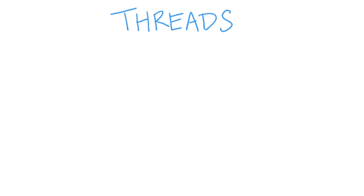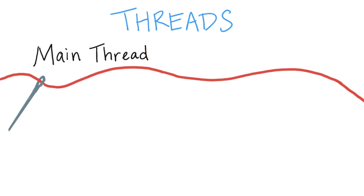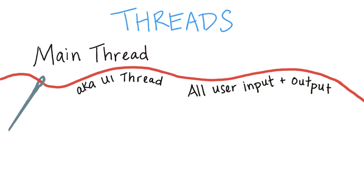When we said that the framework didn't want us to run network operations on the main thread, what is the main thread? Well, Android apps run by default on the main thread, also called the UI thread. It handles all the user input as well as the output, such as screen drawing.